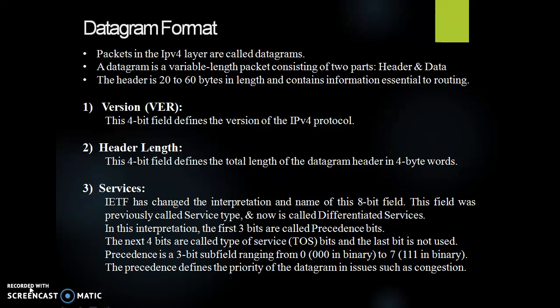Each field of datagram format can be explained as follows. First is version. It is a 4-bit field that defines the version of the IPv4 protocol. This field tells the IPv4 software running in the processing machine that the datagram has the format of version 4. All fields must be interpreted as specified in the 4th version of the protocol.